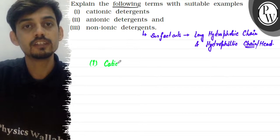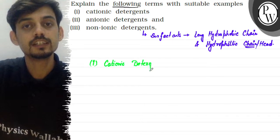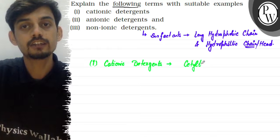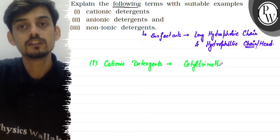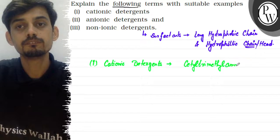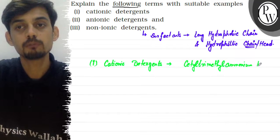Cationic detergents are commonly ammonium detergents — these are long chain ammonium detergents. The hydrophobic chain is a long carbon chain. A common example is cetyl trimethyl ammonium bromide.